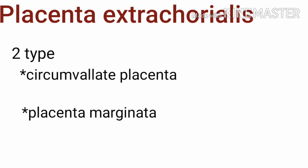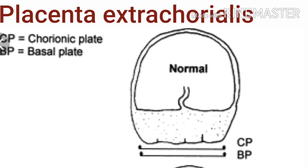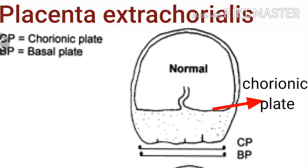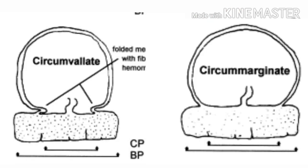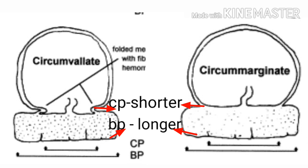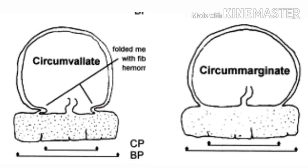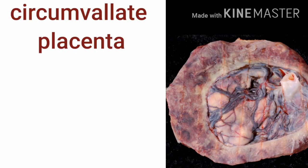The second placental abnormality is placenta extrachoriallis, which is of two types: placenta marginata and circumvallate placenta. In this schematic representation, the normal placenta is formed by a maternal component and fetal component — the chorionic plate (CP) and the basal plate (BP). Normally, the chorionic plate extends up to the basal plate so they are equal in size. But in placenta extrachoriallis — both circumvallate and marginata — the chorionic plate is shorter than the basal plate, causing the chorion and amnion membranes to fold and roll back upon themselves to form a ring centrally.